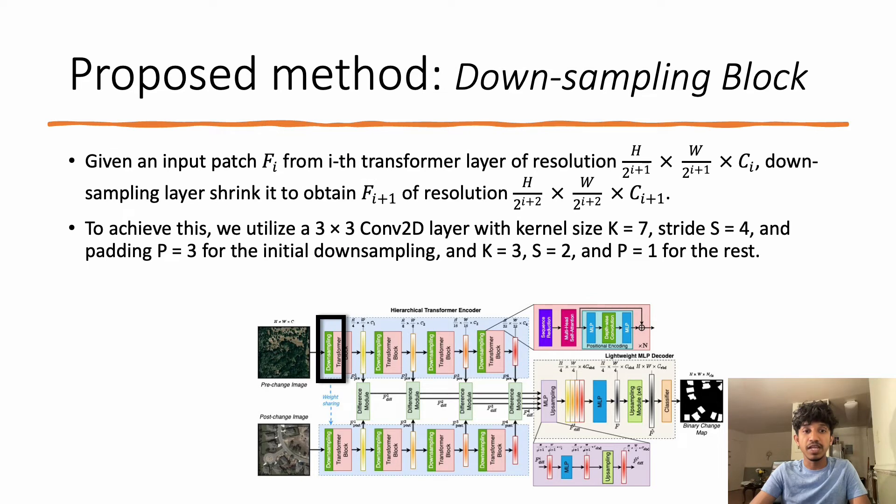Given an input patch F_i from the i-th transformer layer, the downsampling layer shrinks it to obtain F_{i+1}, which will be the input to the (i+1)-th transformer layer. To achieve this, we utilize a 3×3 Conv2D layer with kernel size of 7, stride of 4, and padding of 3 for the initial downsampling, and kernel size of 3, stride of 2, and padding of 1 for the rest of the layers.